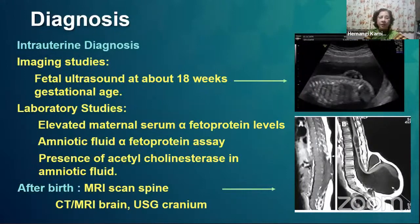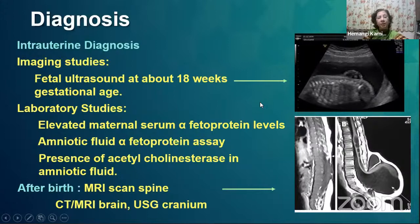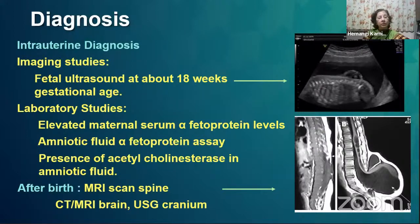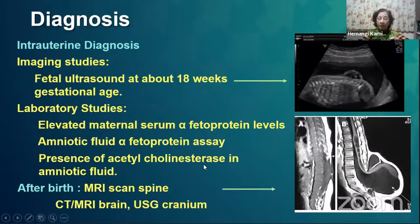MMC can be easily diagnosed in the intrauterine phase during fetal imaging. If swelling is noted at 18 weeks USG, further laboratory studies can be done such as serum alpha-fetoprotein or amniotic fluid assessment. At birth the swelling is immediately visible and can be further diagnosed by MRI scan of the spine. CT is not usually advocated due to high radiation, though some patients do present having had CT done. MRI of brain and USG of cranium should also be done to identify associated cranial deformities.